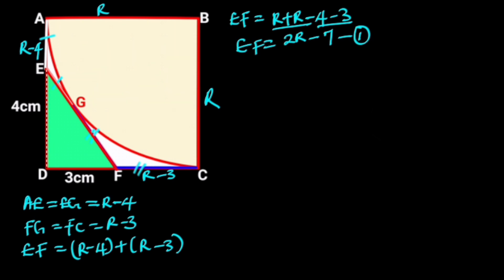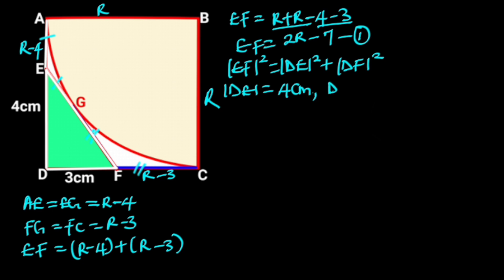Next, in triangle DEF, we are going to use Pythagoras theorem to find the length of EF. From Pythagoras theorem, EF² is equal to DE² plus DF². Since DE is equal to 4 centimeters and DF is 3 centimeters, it follows that EF² is equal to 4² plus 3². 4² is 16 and 3² is 9. EF² is equal to 16 plus 9. 16 plus 9 is 25. So EF² is equal to 25.